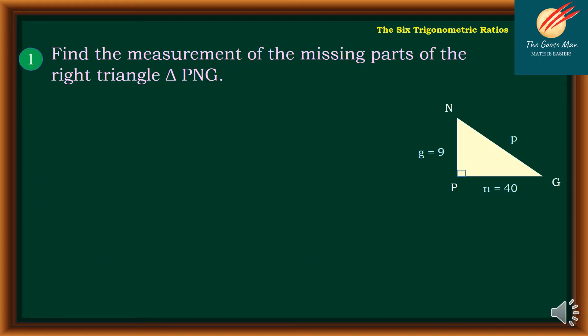So let's consider the illustration on the right side. Find the measurement of the missing parts of the right triangle PNG. So we have the right triangle PNG. So given that g = 9 (one leg), so that is on the side NP, as well as the side n or line segment PG is equal to 40.